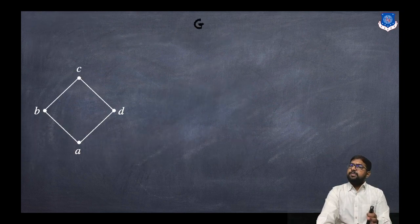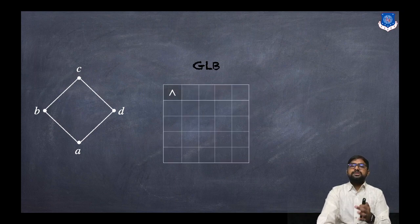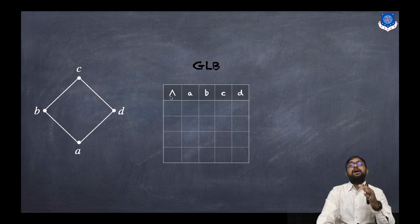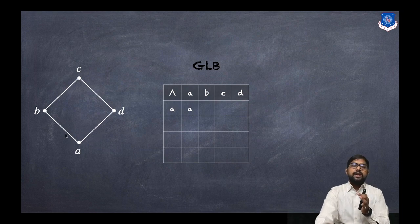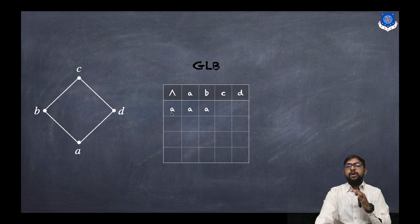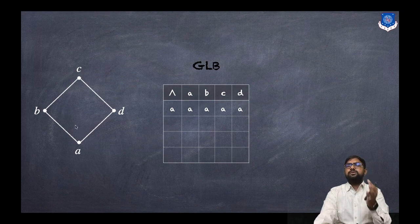Now we construct the GLB table. In the columns we write a, b, c, d and in the rows the same. GLB of a and a is a. GLB of a and b is a. GLB of a and c is a, and a and d is a — since a is the greatest lower bound of the whole graph, whenever a is involved the answer is a.